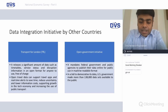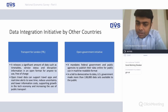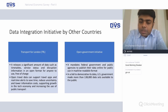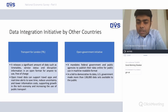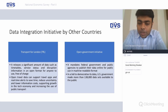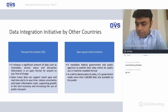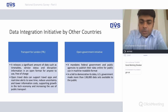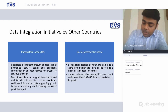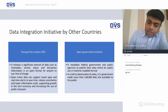The government and public agencies should publish their data online in a machine-readable format. This also helps private enterprises and the public to take informed decisions. The US government has already made 138,000 data sets available to the public.